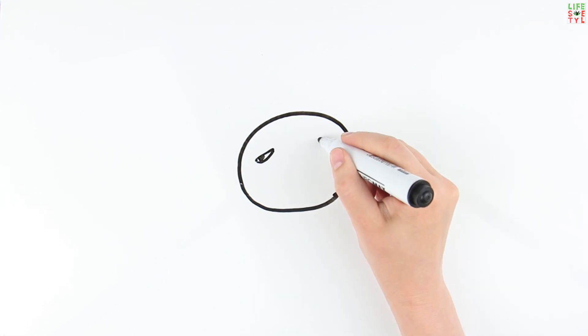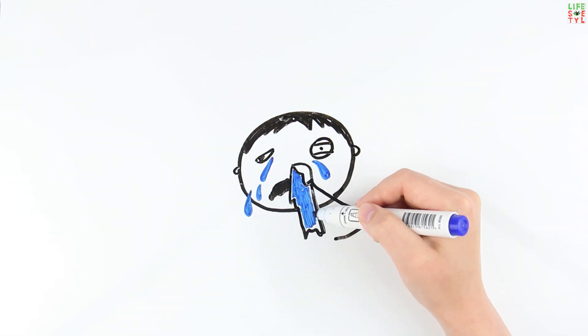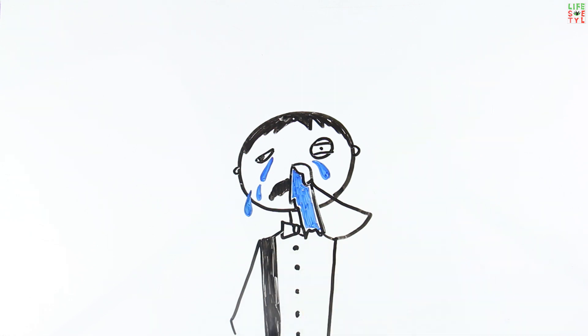Task number four: emotions. Tears are an external manifestation of strong feelings and emotional excitement, a way to relieve nervous tension. Amazingly, the chemical composition of tears differs depending on the reason you are crying.